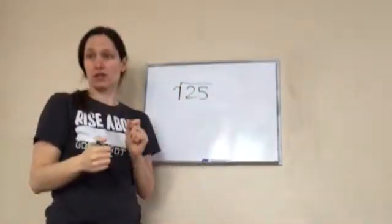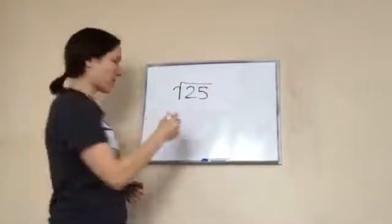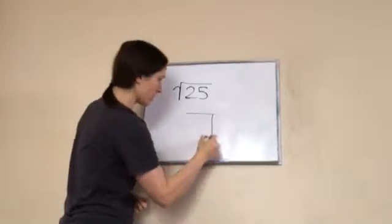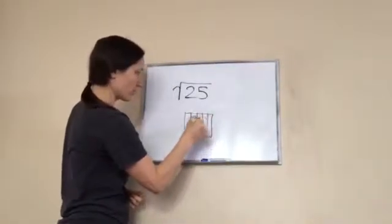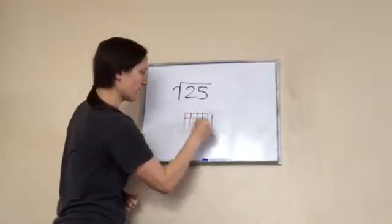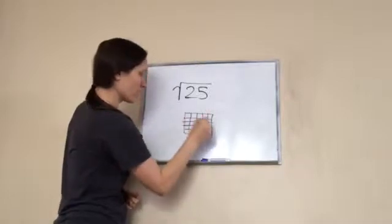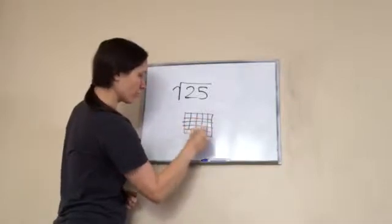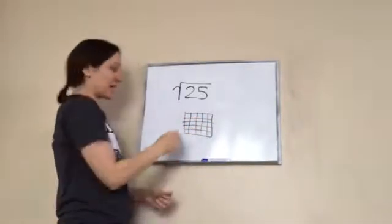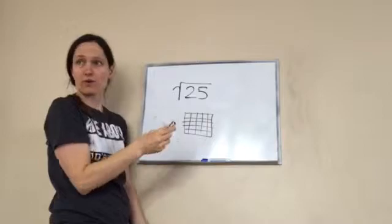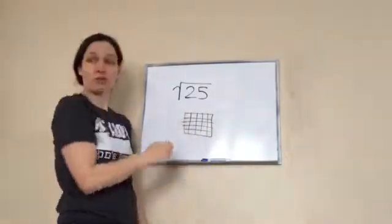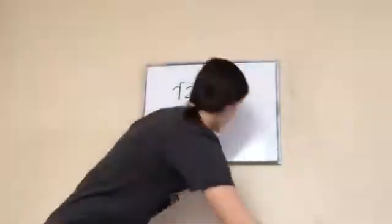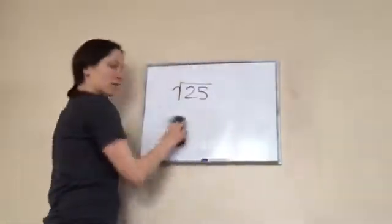The reason why they call it a square root is because if I did this — one, two, three, four, five by one, two, three, four, five — it makes a perfect square, and there are 25 in there. That's why it's called a square root, because it forms a perfect square.